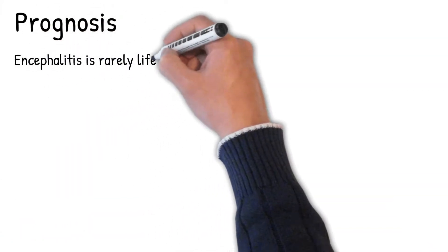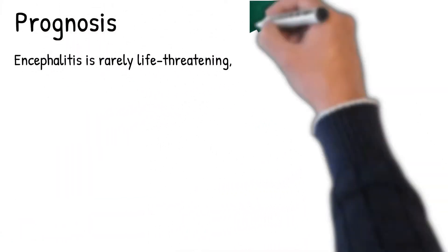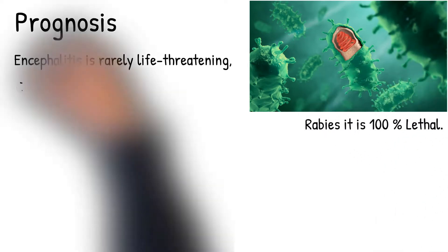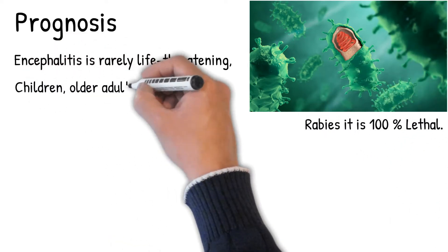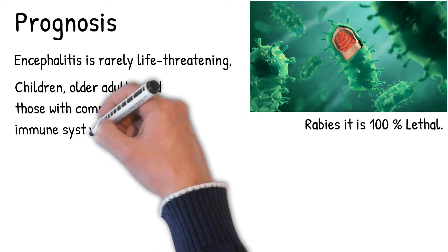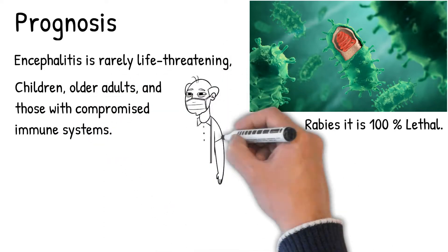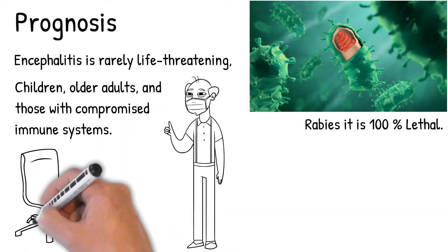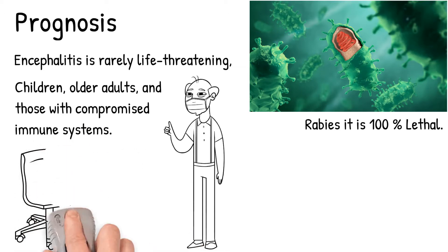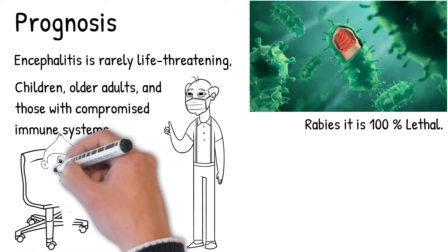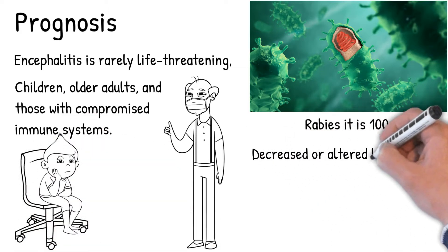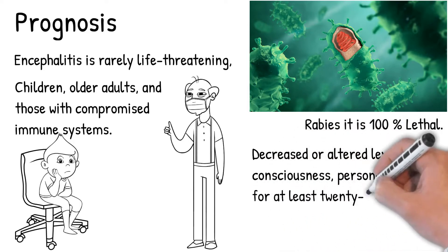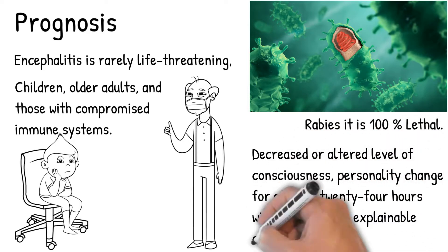Encephalitis is rarely life-threatening, especially if discovered and treated at an early stage. However, it depends on the causative agent — for example, if it is caused by rabies it is 100% lethal. Encephalitis most often affects children, older adults, and those with compromised immune systems. Decreased or altered level of consciousness, and personality change for at least 24 hours without any other explainable cause.